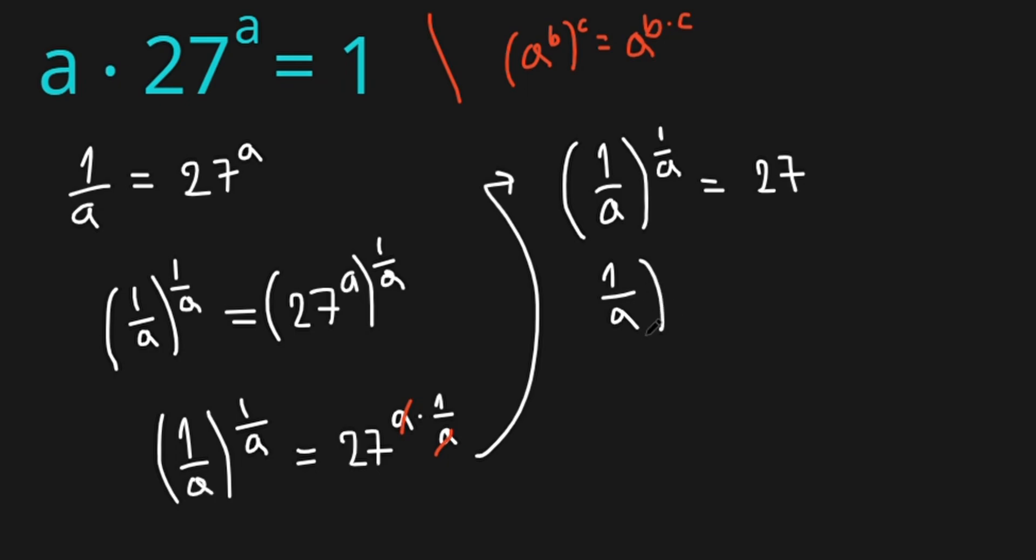1 over a to the power of 1 over a equals 27, which can be written as 3 to the power of 3.